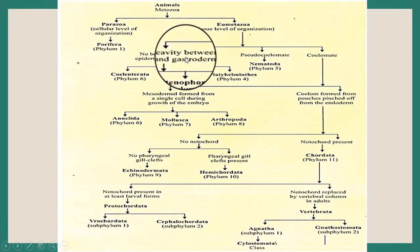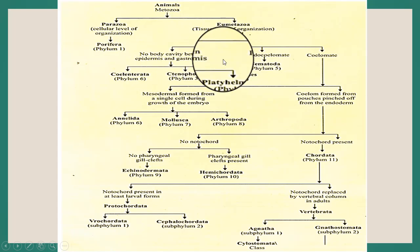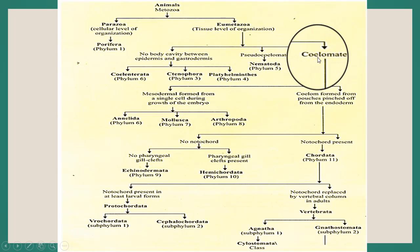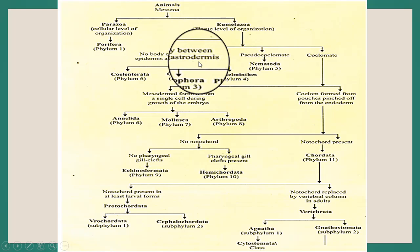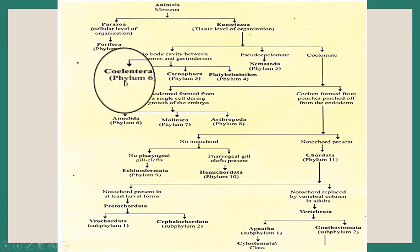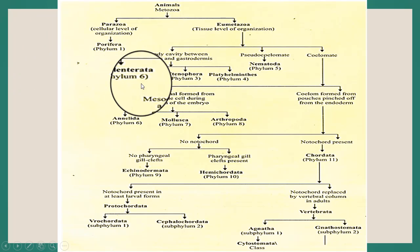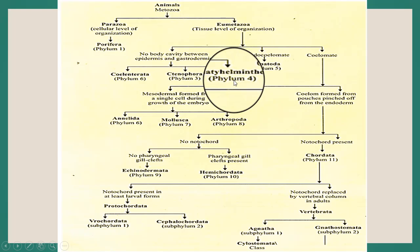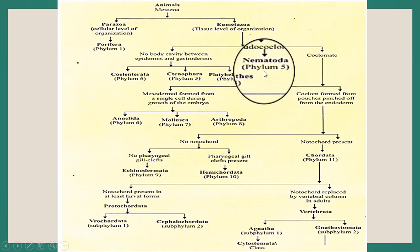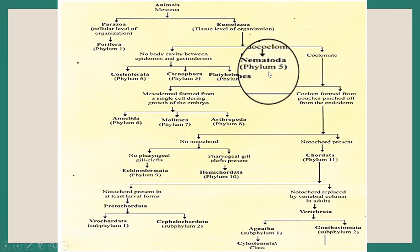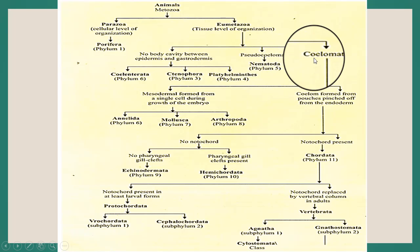Eumetazoa is further divided into three subtypes: first, animals with no body cavity between epidermis and gastrodermis; second, pseudocoelomites; and third, coelomites. Under the first subtype — no body cavity between epidermis and gastrodermis — there are further phylums. Under pseudocoelomites comes Phylum 5, that is Nematoda.